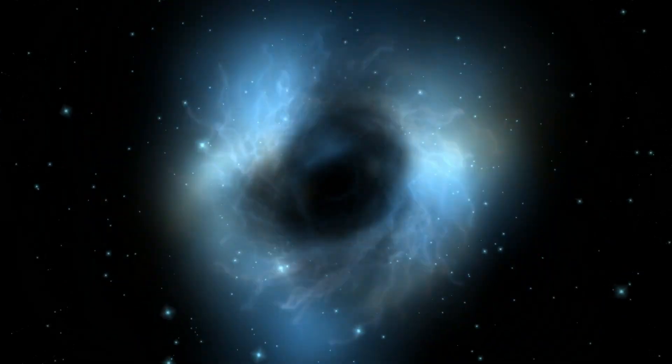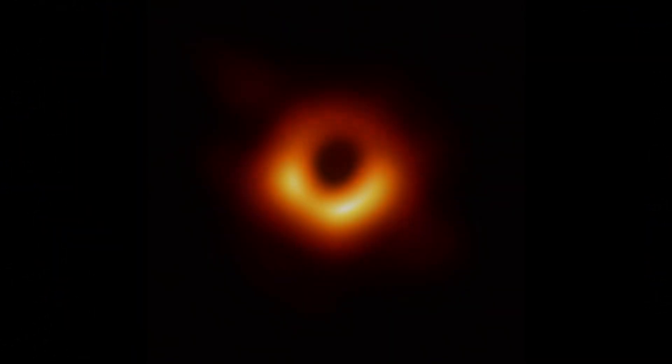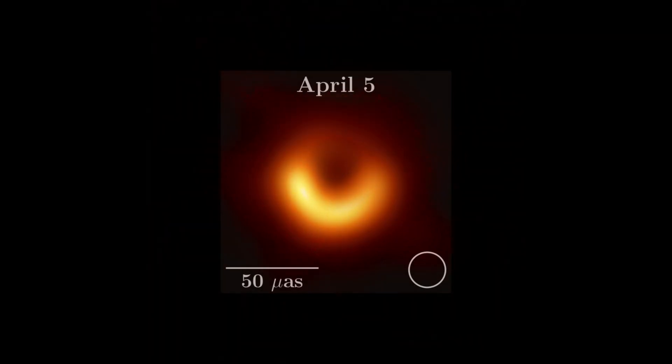This finding provides the first direct evidence that black holes indeed have a spin, confirming a prediction of Einstein's theory of relativity. M87 is a well-studied black hole, notably imaged for the first time in 2019, and resides at the center of the Messier 87 galaxy.